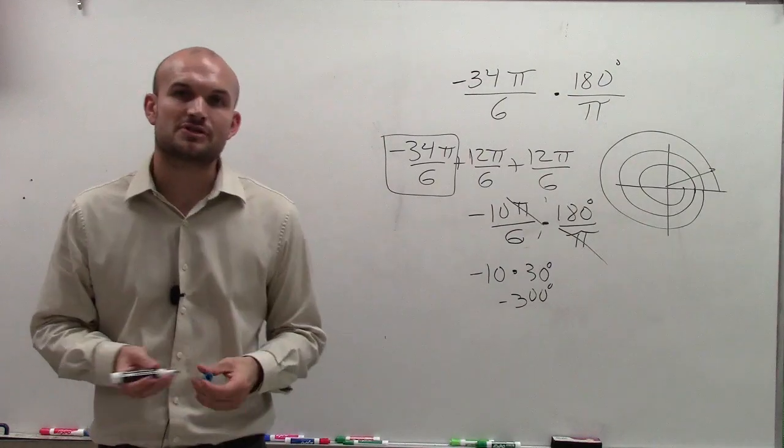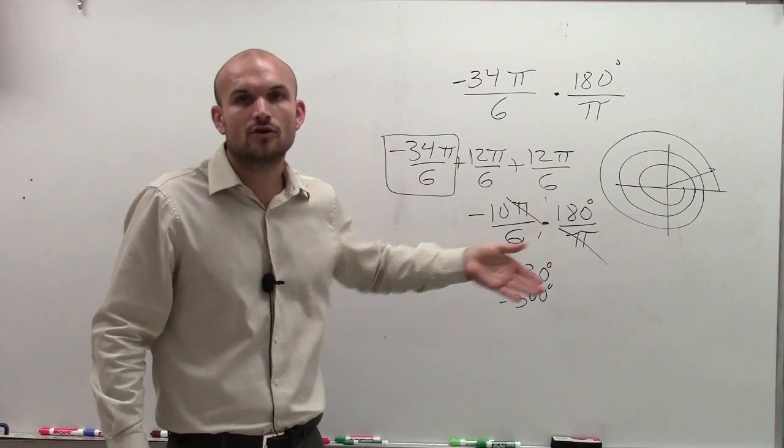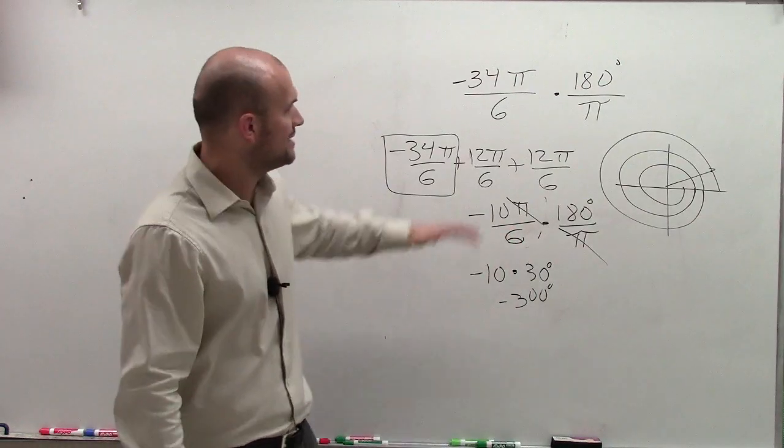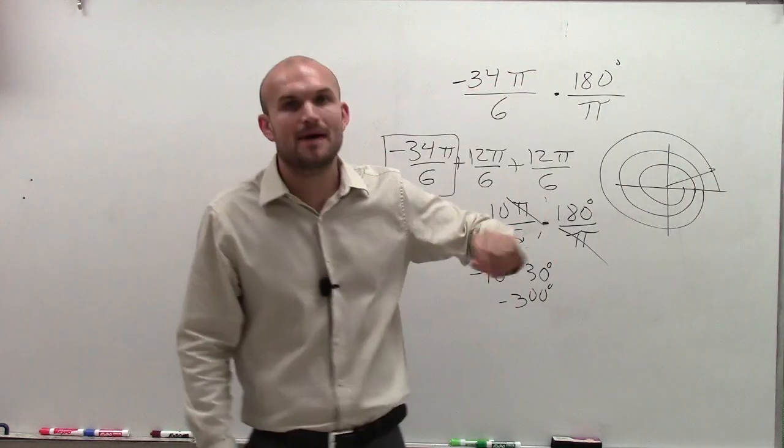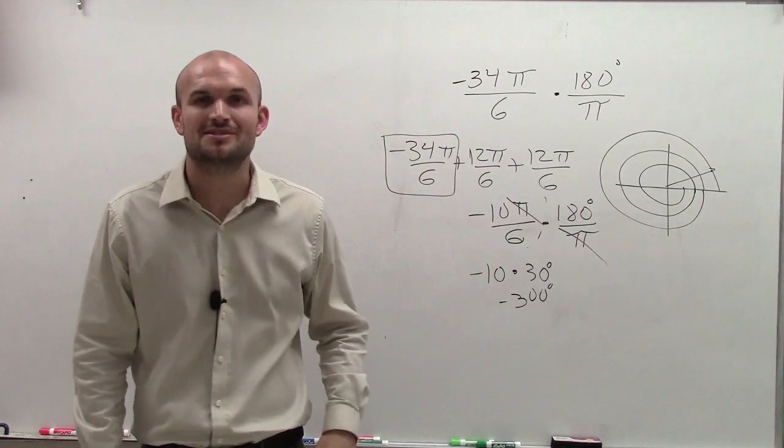So there you go, ladies and gentlemen. When you have a large angle like that, try to use your period as an aid and knock out all those extra revolutions, but then make sure you take your angle, multiply it by 180 degrees over π, and then simplify. And you're all set. Thanks.